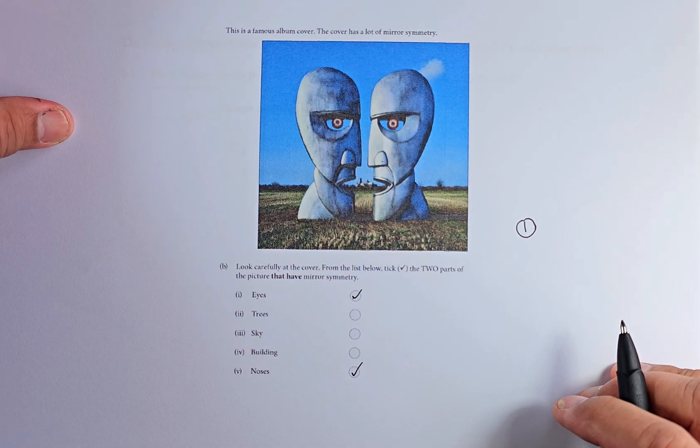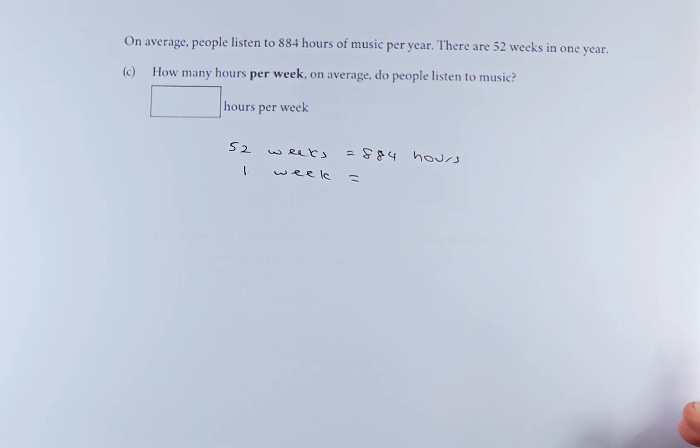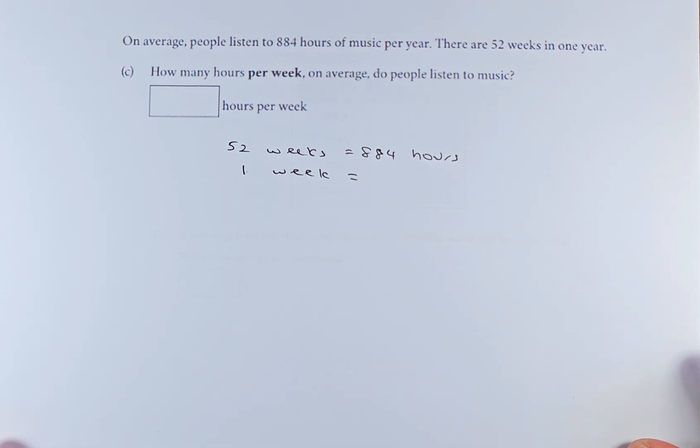Great. Now we shall do question 4C. 4C is a straightforward calculation and let's try to solve this together. On average, people listen to 884 hours of music per year. There are 52 weeks in a year. So how many hours per week on average do people listen to music?